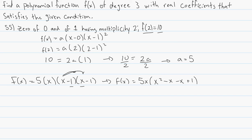So we're going to rewrite this. We have x squared minus 2x plus 1, and then we're going to distribute this 5x.